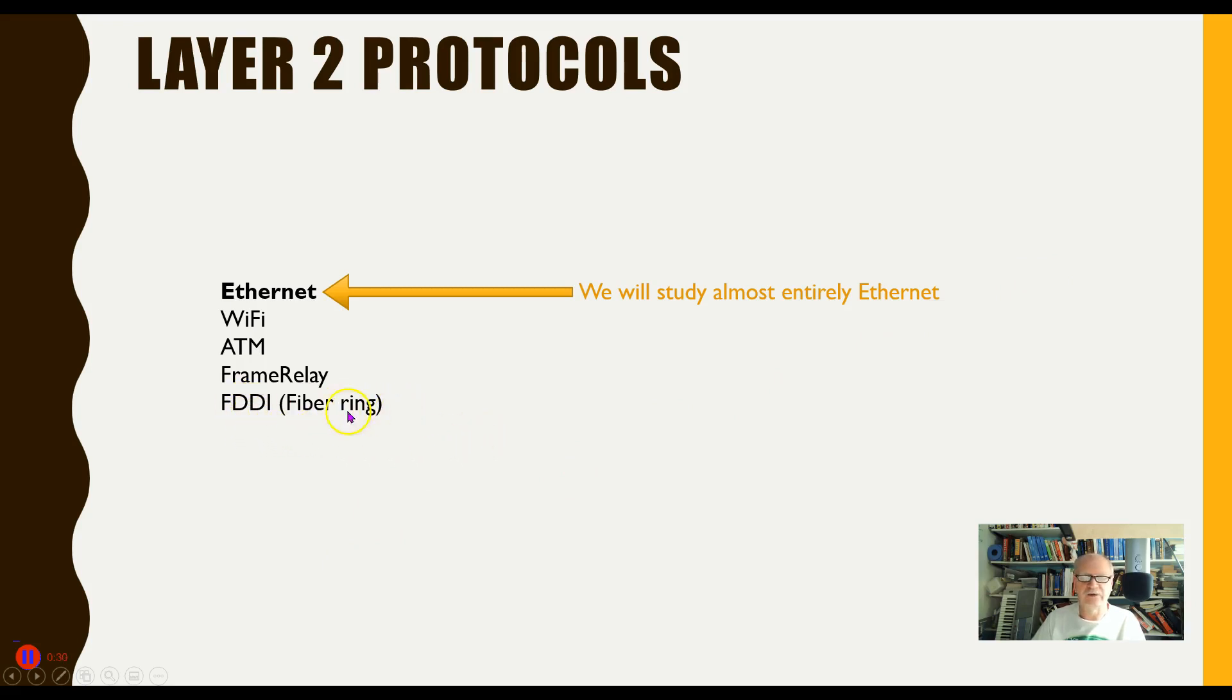And then Fiber had a Layer 2 protocol which again is not used very much anymore. It's kind of outdated. It's called FDDI. I don't even remember what the acronym stands for, but it's a fiber ring kind of like the token ring, which we'll be taking more of a look at later on.